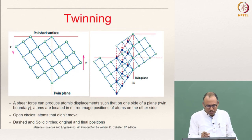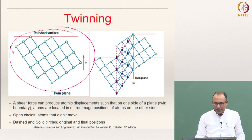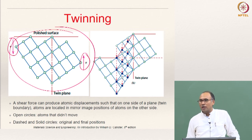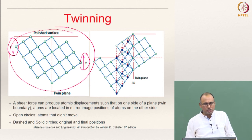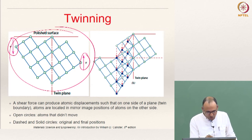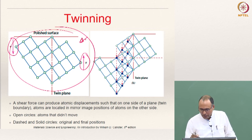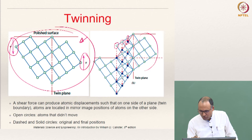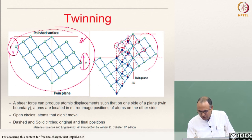In twinning, consider a perfect crystal with a twin plane — analogous to a slip plane — under applied shear stress. There must be a coordinated atom motion across the twin plane such that after deformation, the atoms take mirror image positions. This is the initial crystal lattice; the dot-dashed atoms are original positions. By causing slip through twinning, the atoms on one side move so that each layer becomes a mirror image of the corresponding layer on the other side.